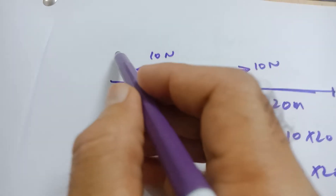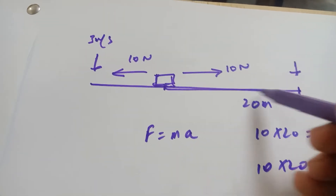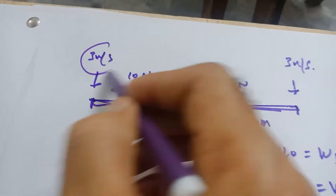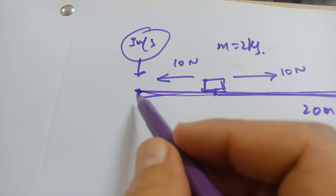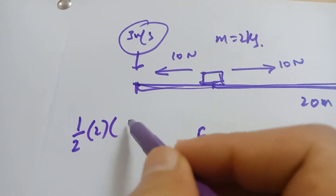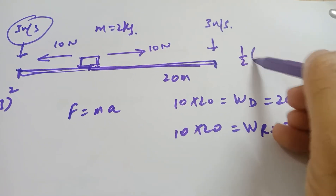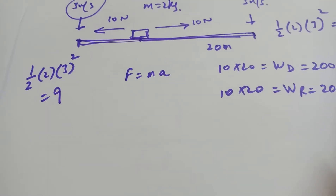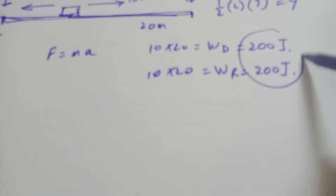Now suppose the speed at the start was 3 m/s and over this 20 meter distance the speed at the end is also 3 m/s. With a mass of 2 kg, the kinetic energy at both points is ½ × 2 × 3² = 9 Joules. So there is no change in kinetic energy, and the net work done is also zero. This confirms our result.